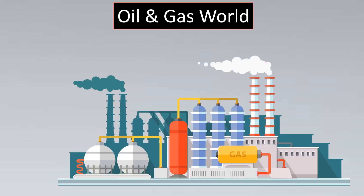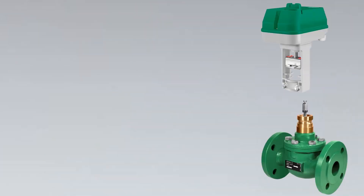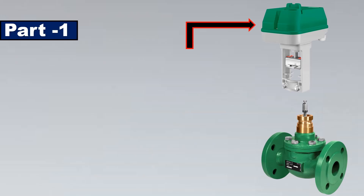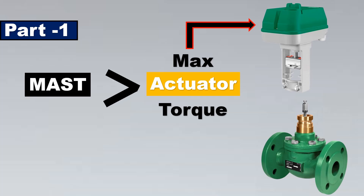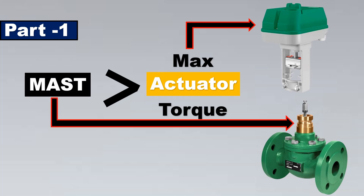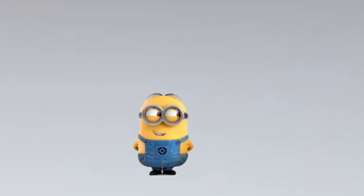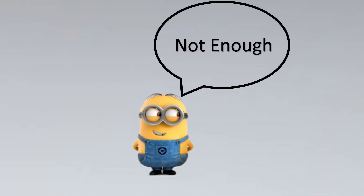In oil and gas, as we learned in the last video, MAST — the Maximum Allowable Stem Torque — means the actuator stem torque should always be less than the MAST, which is the stem's capacity to hold that torque. But that's not enough. You have to think about the three major points you need to know for MAST.